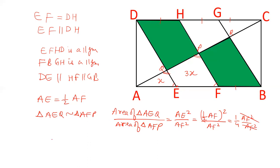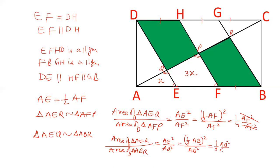In the similar way, we can prove that triangle AEQ is similar to triangle ABR. So area of triangle AEQ upon area of triangle ABR is equal to AE² upon AB². Now AE is 1/3 of AB.